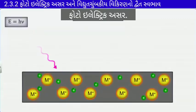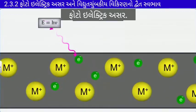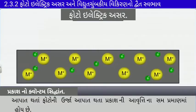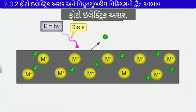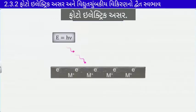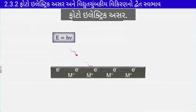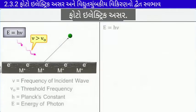આગળના મુદ્દા આપણે જોઈ ગયા, એ તો ઠીક છે. જેને આપણે ફોટોન કહ્યું, અને આ ફોટોન અથળાય છે ને ઈલેક્ટ્રોનને કાઢી નાખશે — આ લખોટો ઉઝે, એક લખોટો બીજો. ને કાઢ નાઘી — હેસા — મઝા. પ્રકાશનો ક્વોન્ટમ સિદ્ધાંત શું કહે છે: આપત થતા ફોટોનની ઊર્જા, આપત થતા પ્રકાશની આવૃત્તિના સંપ્રમાણમાં હોય.